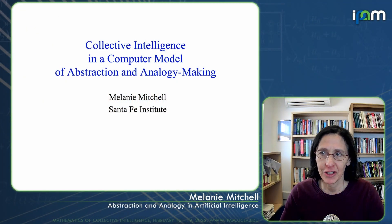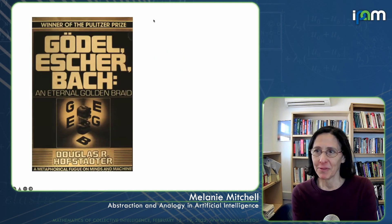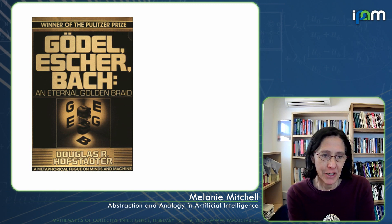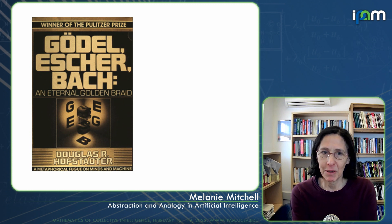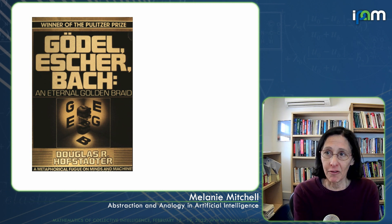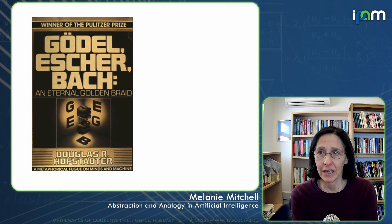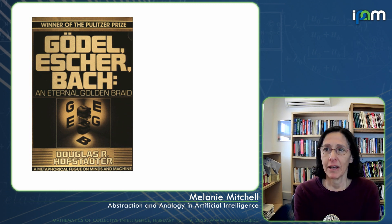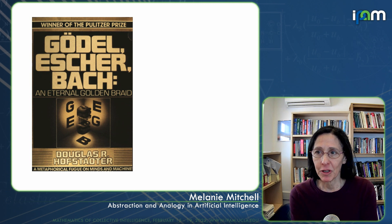What I'm going to talk about today is how my work in abstraction and analogy touches on collective intelligence. Many of you have probably read this book by Douglas Hofstadter. I read it when I was in college and got really inspired to study AI because of it. But looking back on it now, it's really a book about collective intelligence — about how something like intelligence, problem solving, self-consciousness, self-awareness, and abstract thinking can arise from the collective behavior of relatively simple components.